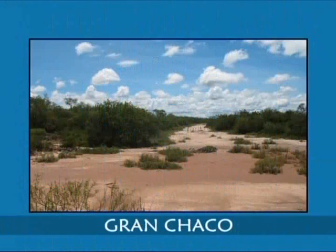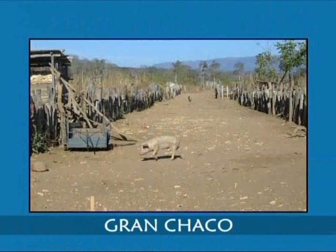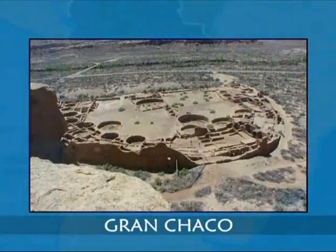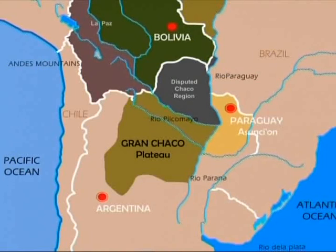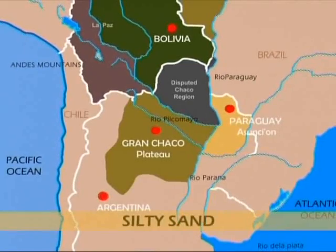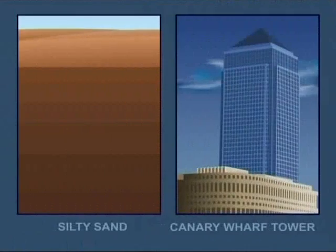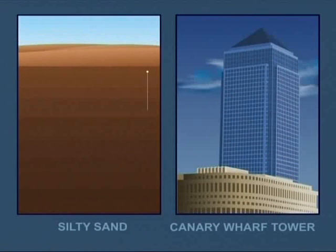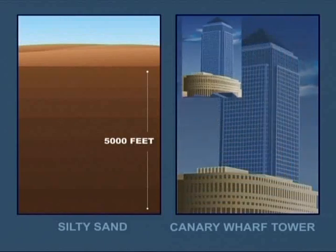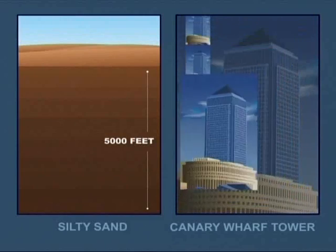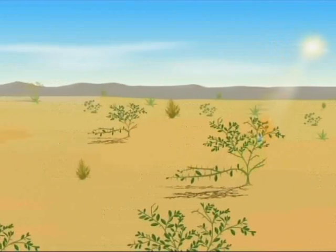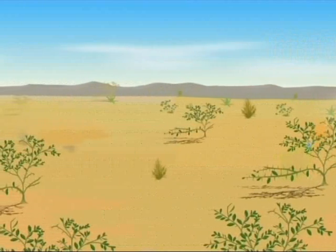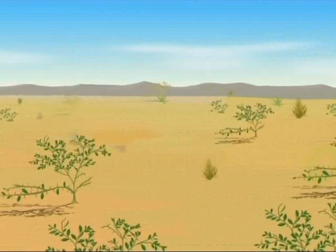The shrubland has one of its harshest areas on planet Earth called the Grand Chaco. Spanning across Argentina, Bolivia and Paraguay, the Grand Chaco is a plain of silky sand. The sand in some places is 5,000 feet deep, which is six times the height of the Canary Wharf Tower in London. Bigger than the whole of France, the Grand Chaco experiences fierce summer heat and is filled with thorny scrub.